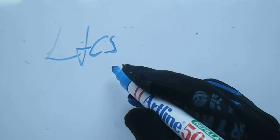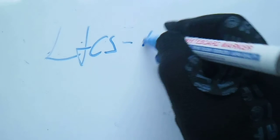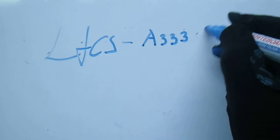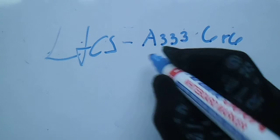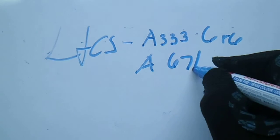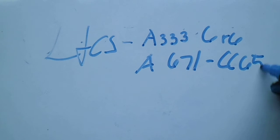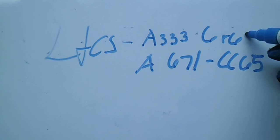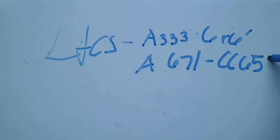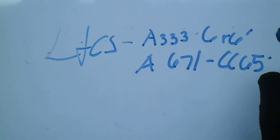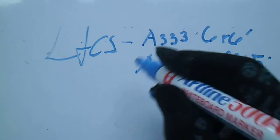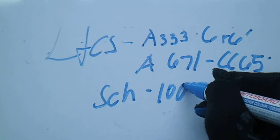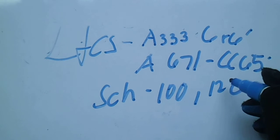Next is LTCS — Low-Temperature Carbon Steel. The ASTM codes are A333 Grade 6 (seamless) and A671 TC65. The color for A333 Grade 6 is yellow, and for A671 TC65 it is sky blue. For LTCS, the schedules are schedule 100 and schedule 120.